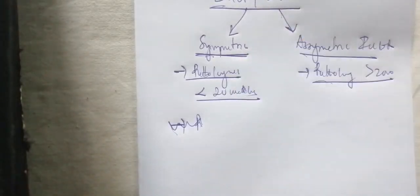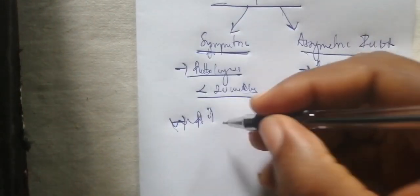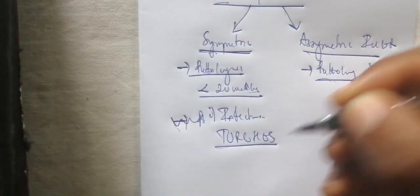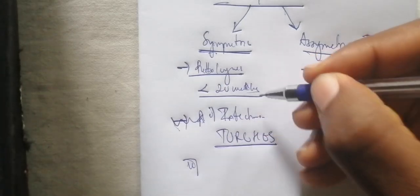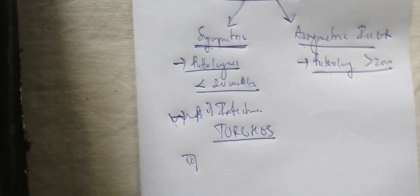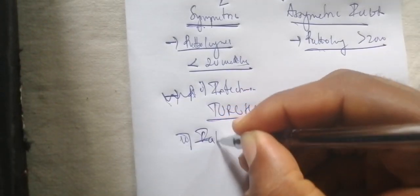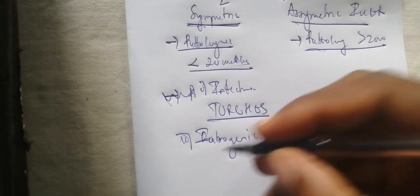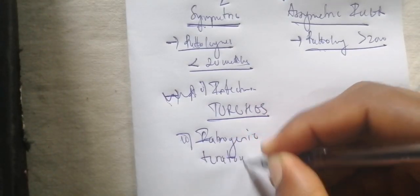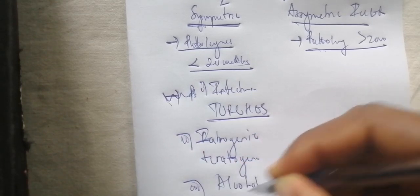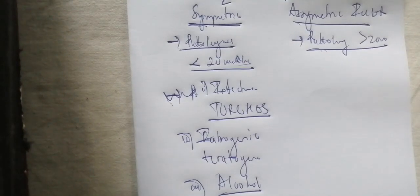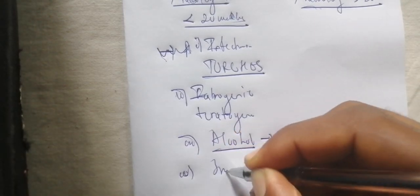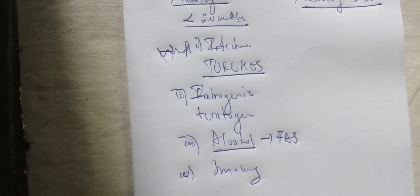Examples of causes of symmetric intrauterine growth restriction include infections such as TORCH infections. If you have malaria disturbing the mother before 20 weeks of gestation, it can result in symmetric intrauterine growth restriction. Iatrogenic or teratogenic drugs used before 20 weeks of gestation can also cause this, including alcohol — as in the case of fetal alcohol syndrome — and smoking, when exposure occurs before 20 weeks of gestation.